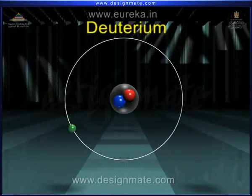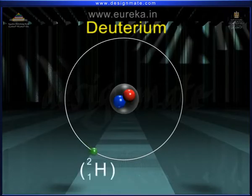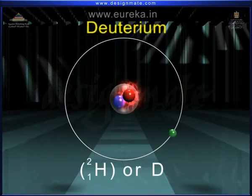Deuterium, or heavy hydrogen, 1H2 or D. The nucleus of the deuterium contains one proton and one neutron.